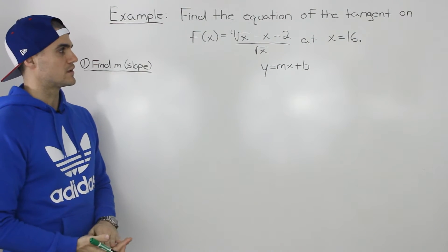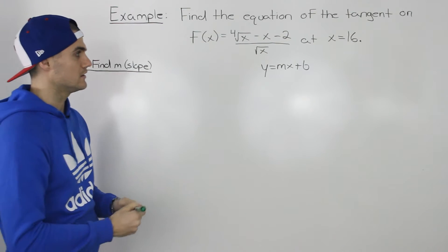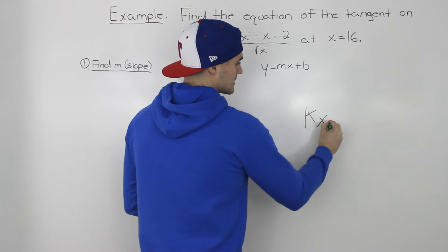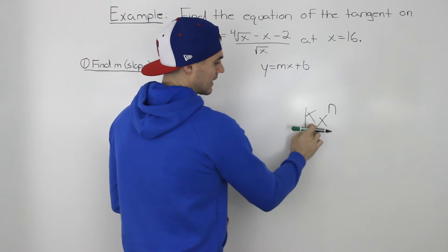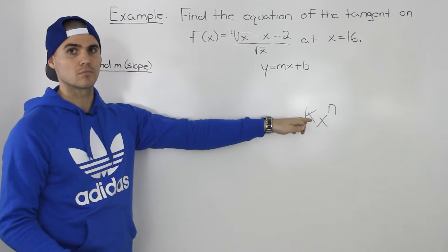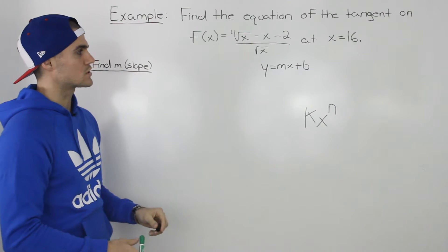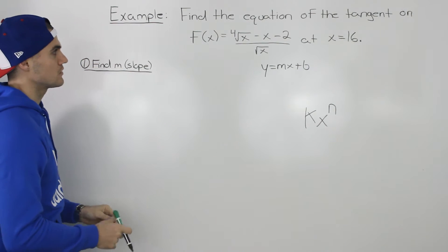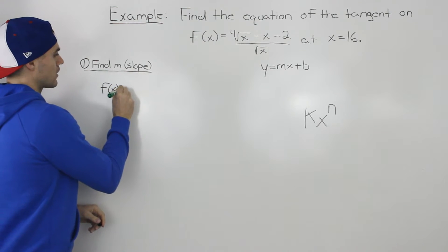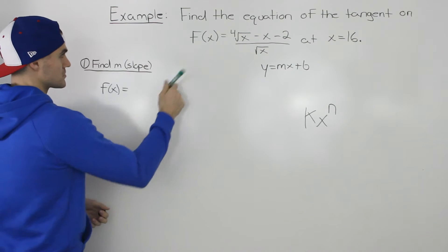To find the derivative, we want to first manipulate this function algebraically so we have all the terms in the format k times x to the n, where k is any constant and n is any real number. Then we can apply the power rule to each of those terms. To start off, let's rewrite this function by changing all the radicals into rational exponents.